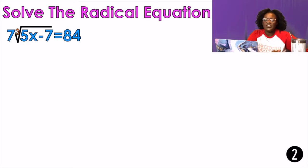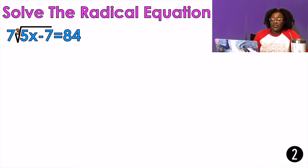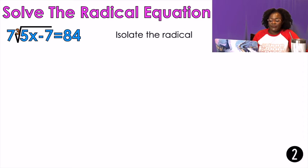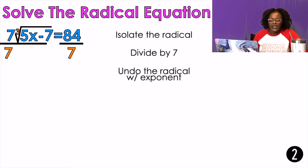Solve the radical equation: 7 times the cube root of 5x minus 7 equals 84. I'm going to get rid of that 7 — divide by 7 on both sides, because the equation has to stay balanced.